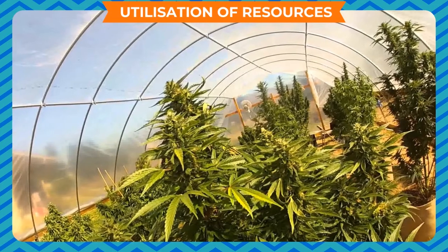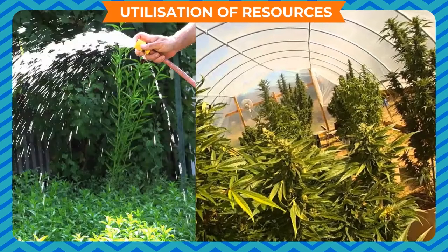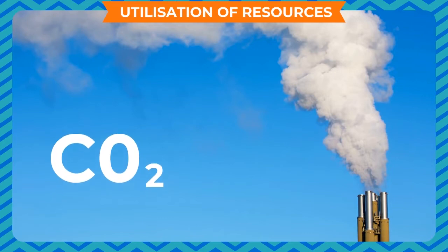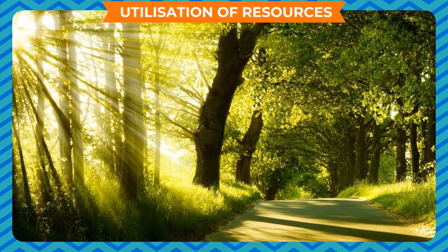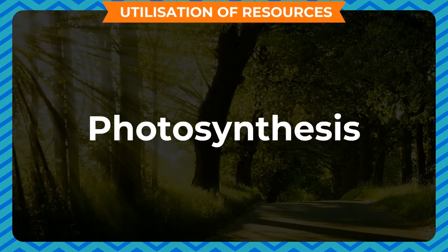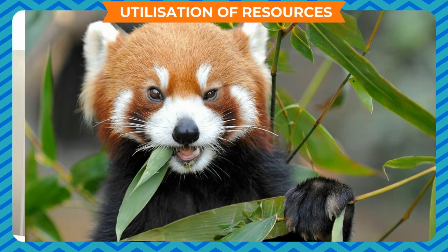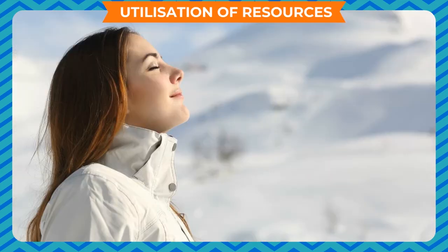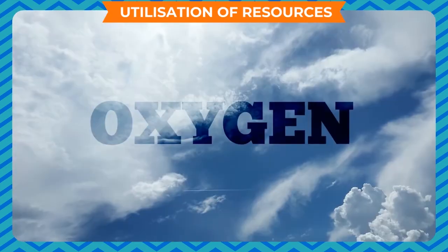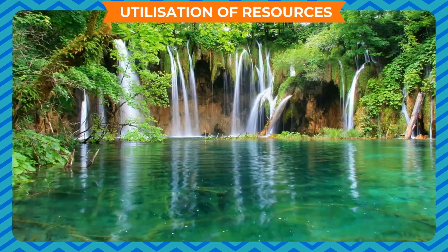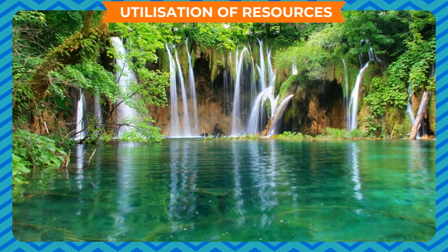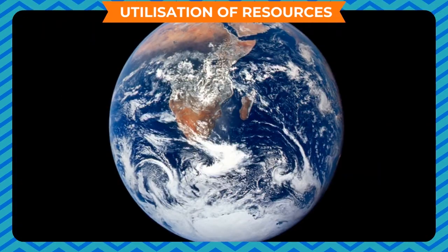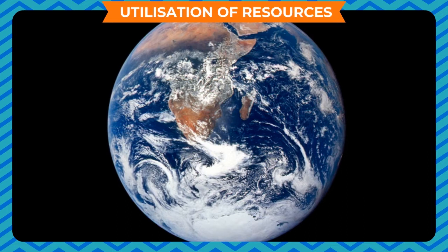Green leaves of plants prepare food by using water and minerals from the soil and carbon dioxide from the air in the presence of sunlight, by the process called photosynthesis. Animals, including human beings, need this food along with air and water for their survival. They get oxygen from air, water from different water bodies, and food from plants and other animals.